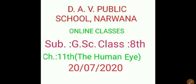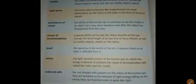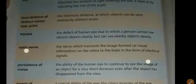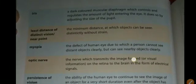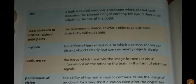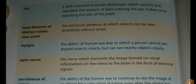Hi students, welcome to the online classes of Div School. As you know, in the class 8th G Science, we are on chapter 11, the Human Eye. Today we discuss the remaining keywords of this chapter. In the previous lecture, we discussed half of the keywords. Today we discuss the next.